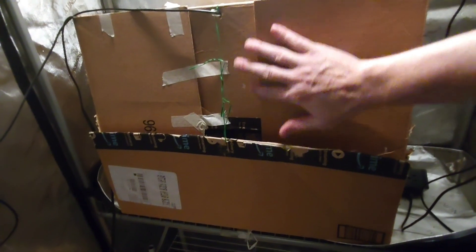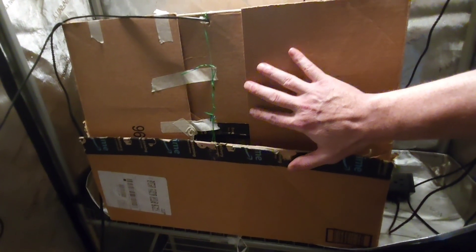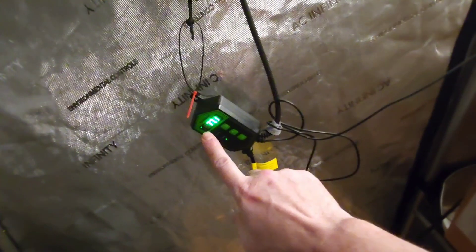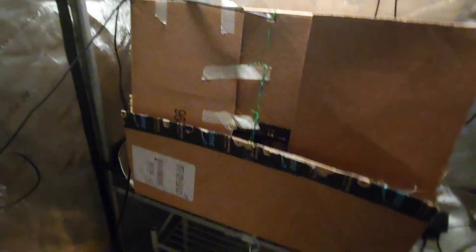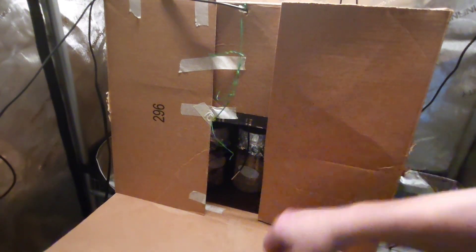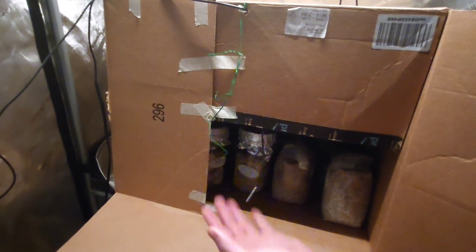So this is what I use for an incubator, just a cardboard box. And then I got a seed mat taped to the back, and then my control over here with my probe going in. And then all I did was poke a hole through the lid and open it up, and there's the probe.